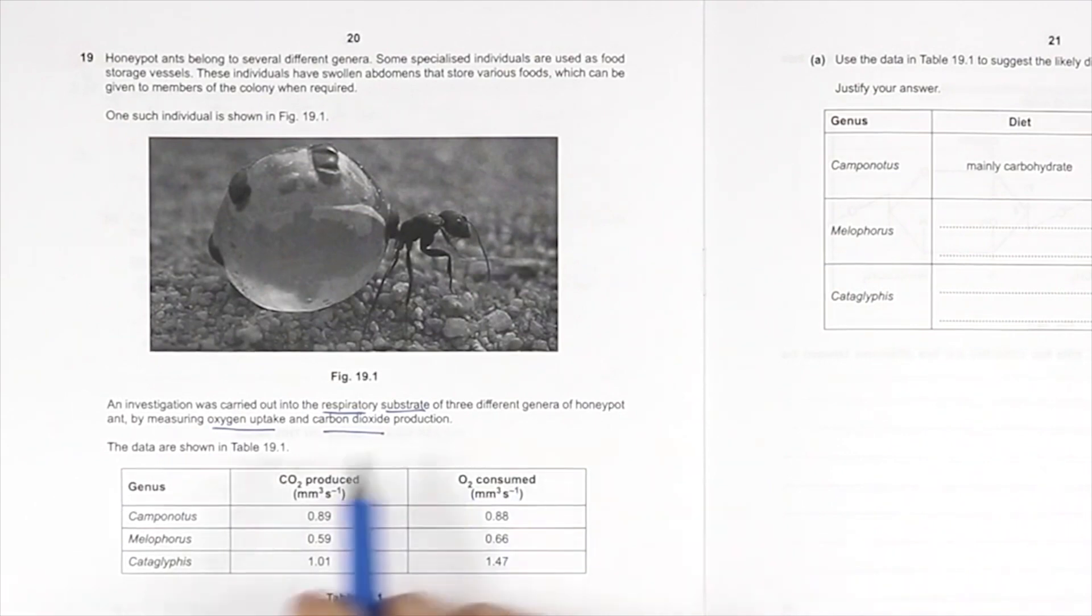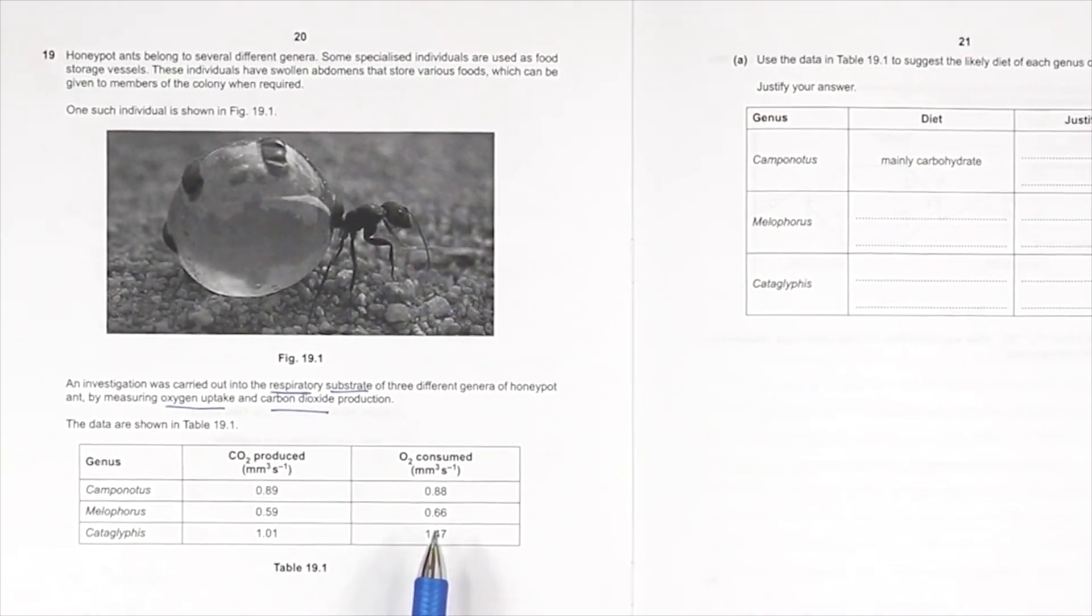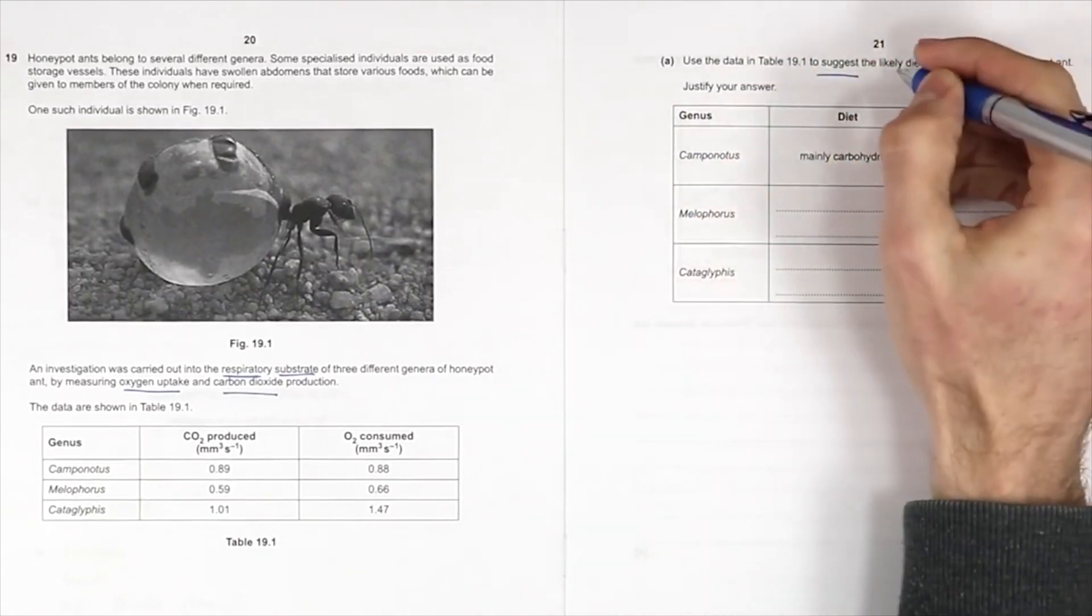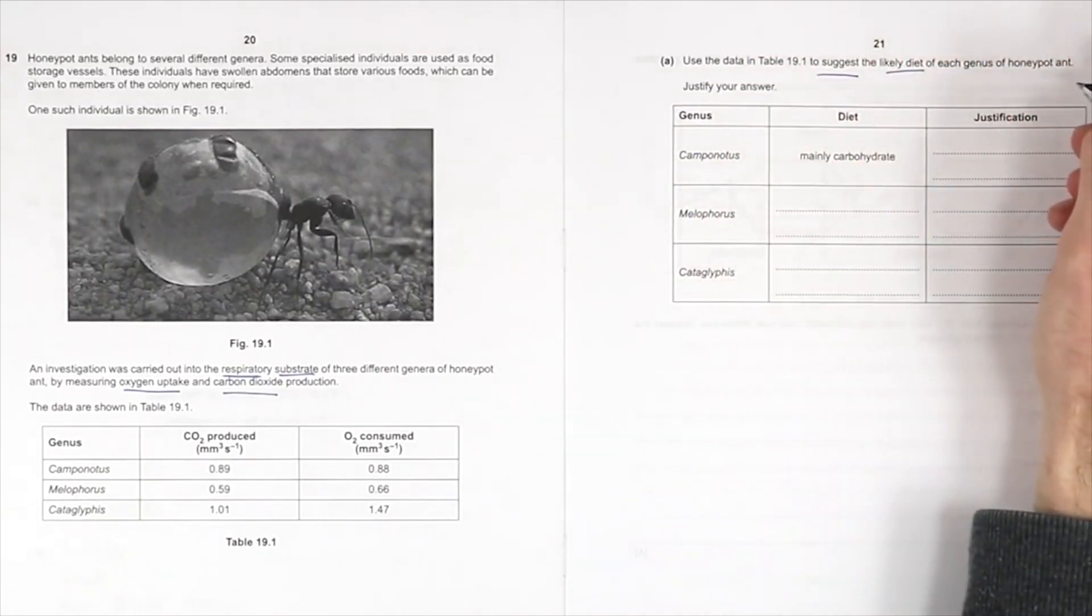So let's move over. We've got the data here. We'll come back to that because we're gonna have to see what we need to do. Use the data to suggest the likely diet of each genus of honeypot ant.